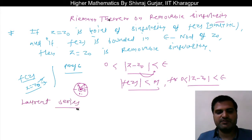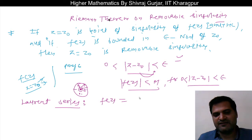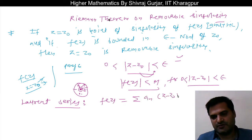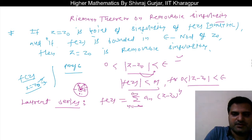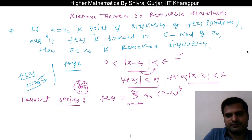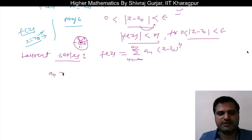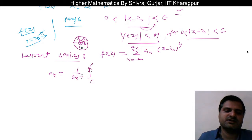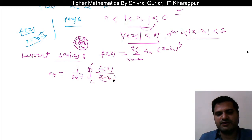We can apply the Laurent series in this region because the function is analytic there. So f(z) equals the sum of aₙ times (z - z-naught)^n where n varies from minus infinity to infinity. The coefficient aₙ equals 1 over 2πi times the integral along curve C of f(z) divided by (z - z-naught)^(n+1) dz, where C is the epsilon-radius circle.